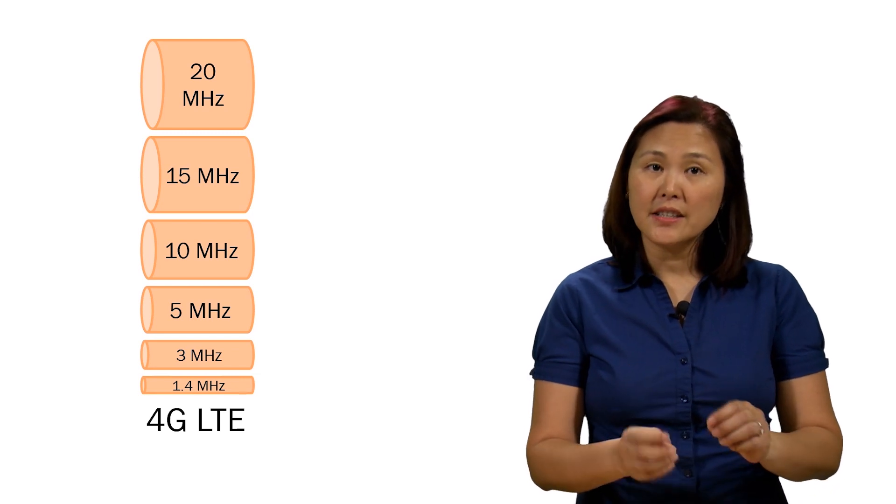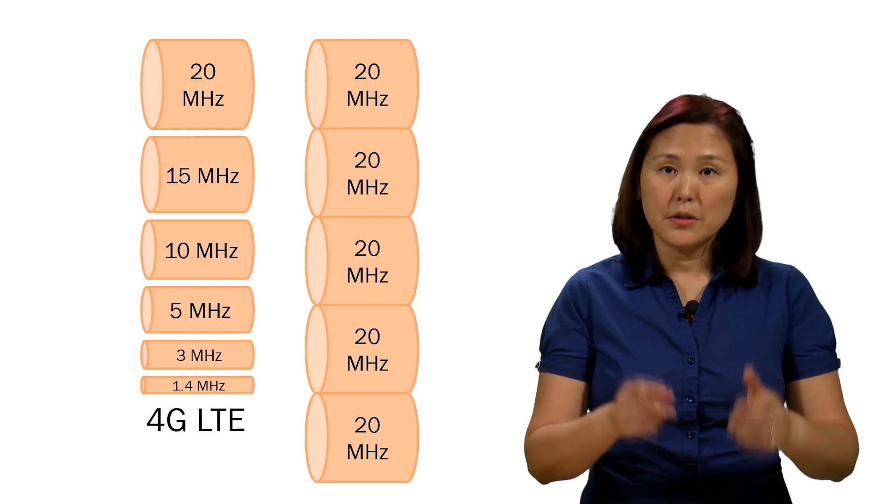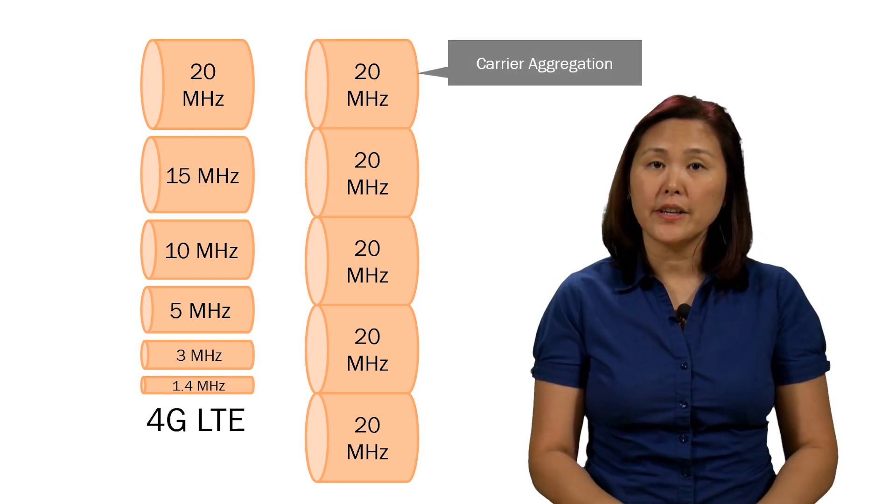In release 10 of LTE Advanced, we're able to put five of those pipes together to provide more throughput to the user. This is called carrier aggregation.